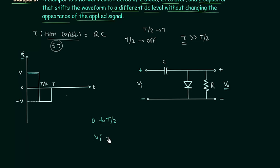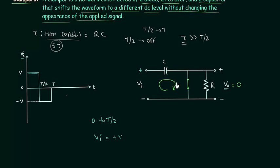In the first half cycle, the direction of current is clockwise, which is the same as the direction of the arrow in the diode symbol, so the diode is forward biased. Replacing the diode with a short circuit (ideal model), the output voltage VO equals 0 because there is no current through the load resistance — the current chooses the path with zero resistance instead.